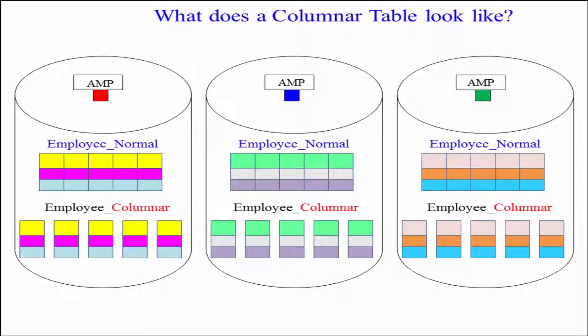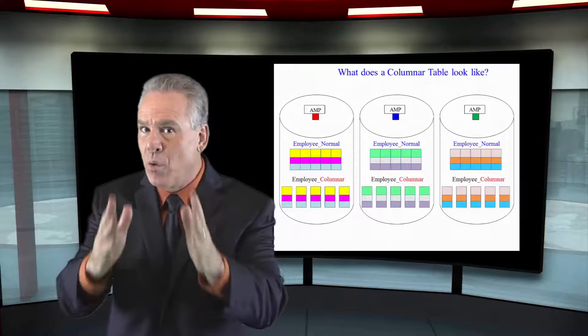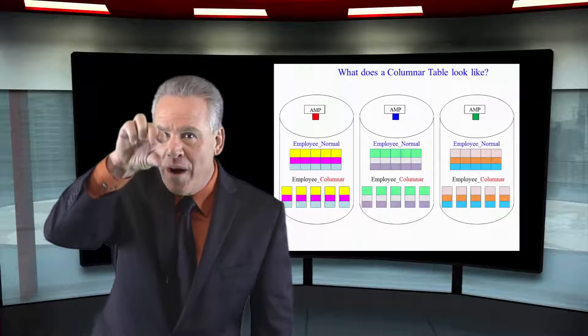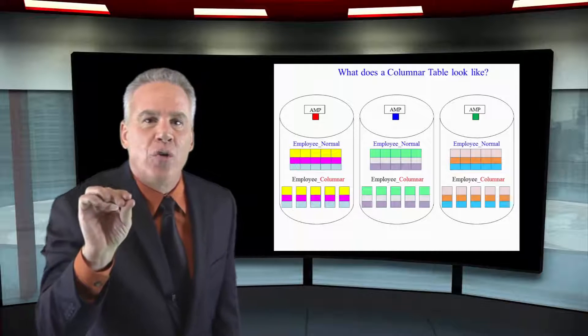What I want you to understand are two things that are going to really help you out here. Number one, if you were going to read employee_normal and wanted to read just one column of one row, you would still have to bring in that entire block to do so. The second thing with employee_columnar is that if you wanted to read one column, one row, you would have to bring in one of those blocks. They're called containers.